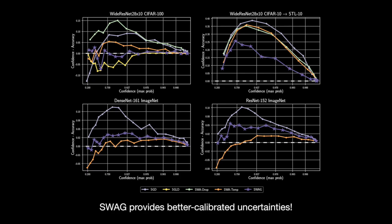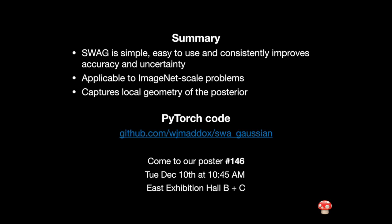Across the board, SWAG consistently performs better than or on par with state-of-the-art methods for uncertainty in deep learning. In the slide, we show reliability diagrams, which visualize uncertainty calibration. We split test data into bins based on model confidence and compute the difference between average accuracy and confidence within each bin. A perfectly calibrated method is shown with a wide dashed line, and SWAG's reliability diagrams are closer to zero compared to competing methods. To sum up, SWAG is a very simple and easy-to-use method for improving predictions and uncertainty in deep learning at very low computational cost. For more details, please see the paper.